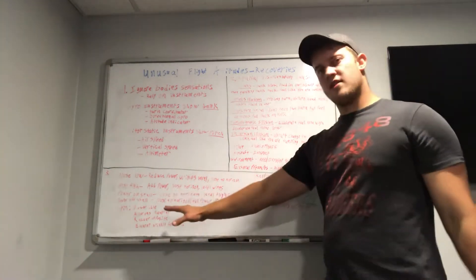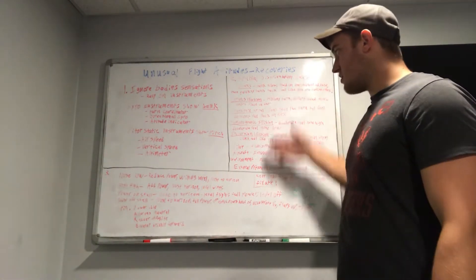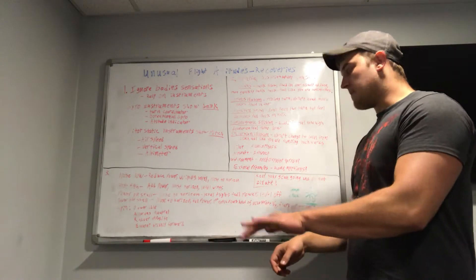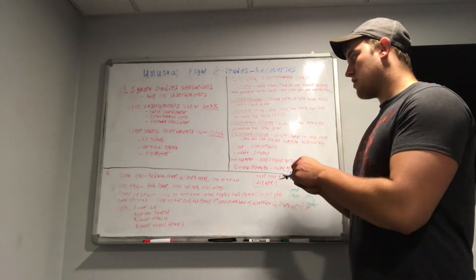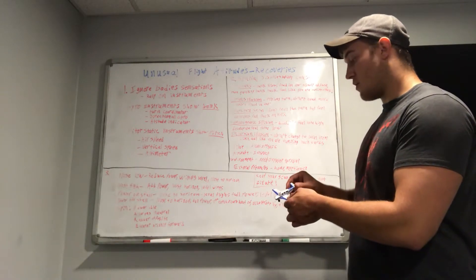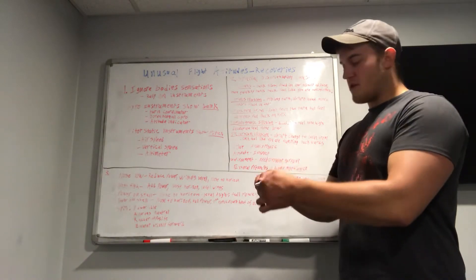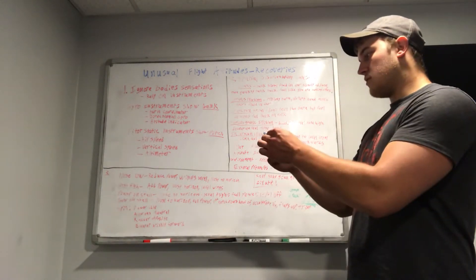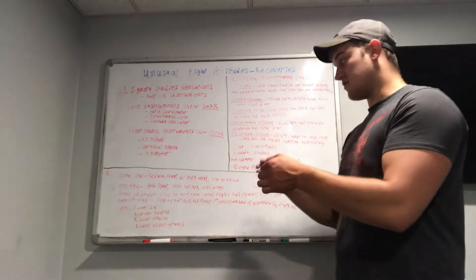Moving down to how to correct any unusual attitude that you may find yourself in, whether it's due to these or any other causes. If you're in a nose low, you want to reduce power, level your wings, and then nose to the horizon. And the reason why it's like that is because if you're in a nose low and you want to pull back to get back to straight and level, if you're in any sort of bank, that'll just tighten the turn. That's why it's like that. And then nose high, you want to add power and then bring that nose to the horizon and then level your wings. So it's just flipped.